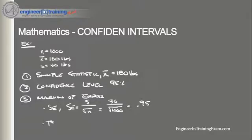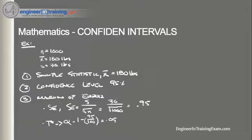Next we need to find t-star. To find t-star, we first compute alpha. Alpha is equal to 1 minus 95 over 100, because 95 is our confidence level, giving us 0.05. Then from alpha we find the critical probability, p-star, which is equal to 1 minus alpha divided by 2, which is equal to 0.975.